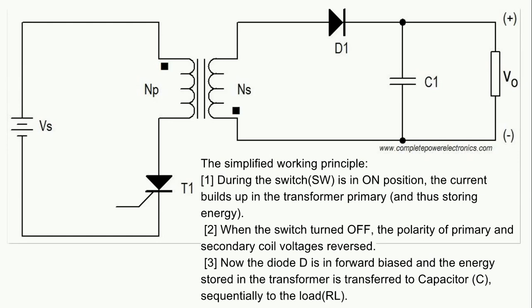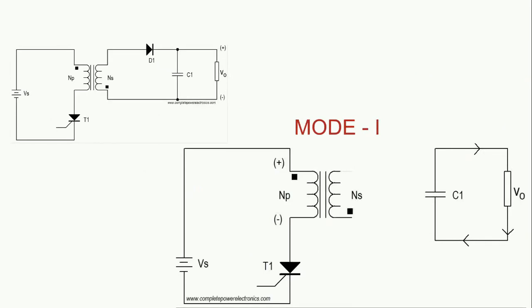We will see the complete operation. The operation of flyback converter can be detailed by discussing two modes. In mode one, the switch is in on condition. In mode two, the switch is in off condition. In mode one, as switch is in on condition, the T1 that is switch - maybe generally it will be a MOSFET or IGBT - it will be here.